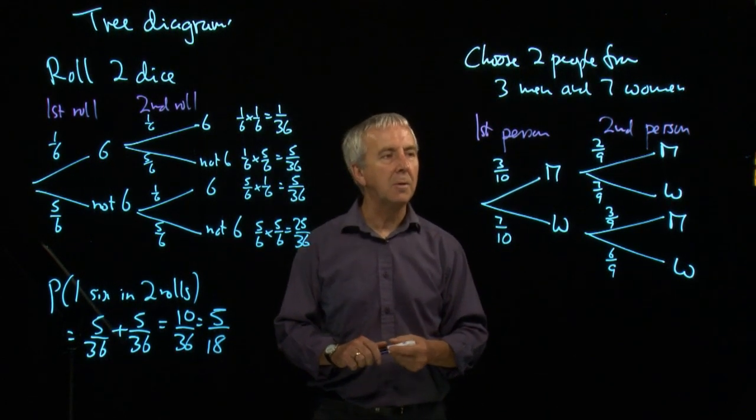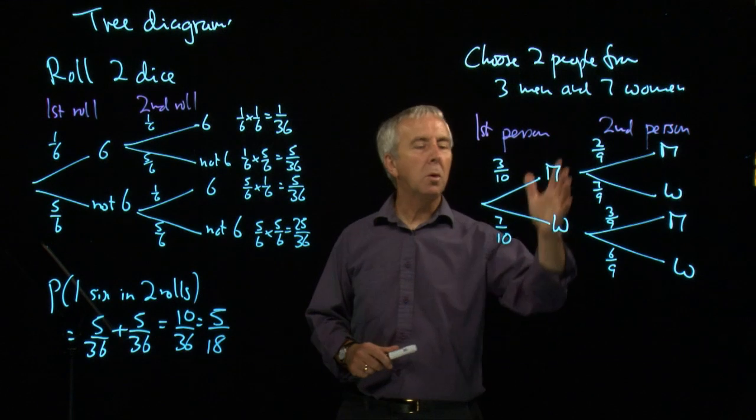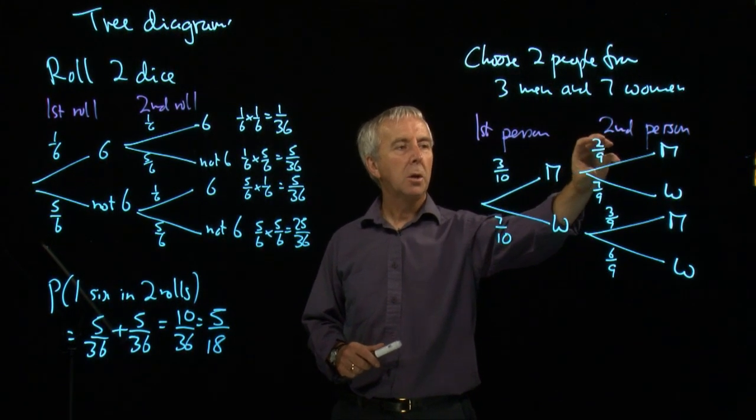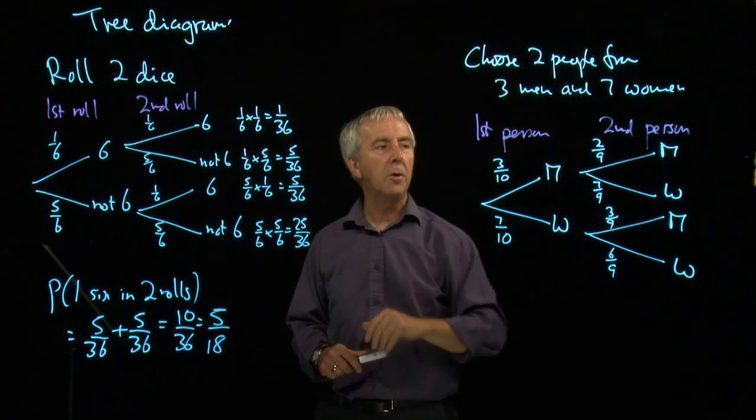So in this case, the probabilities have changed, and we're talking about conditional probabilities. The conditional probability of getting a man conditional on the fact that we got a man first time.